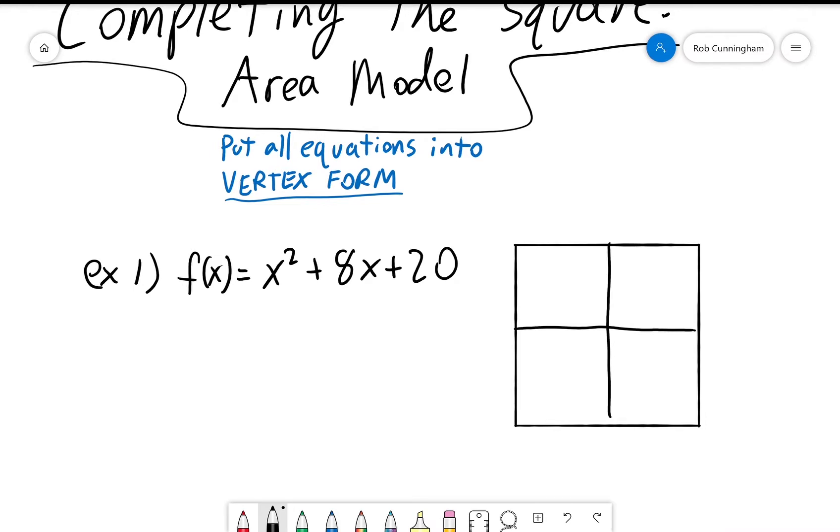Now x squared plus 8x plus 20. Now we've worked with this four area model before, but completing the square is slightly different from factoring. We still put the x squared in this upper left region here, and that still means that these lengths must be x and x. So far it's the same as factoring, but if you'll recall when we were factoring our job was to put the constant in here and then figure out how to fill these two regions in a way that makes a rectangle.